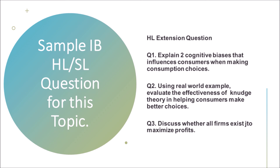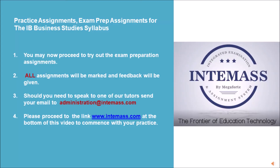Sample exam questions for this topic. HL Extension Question 1: Explain two cognitive biases that influence consumers when making consumption choices. Question 2: Using a real-world example, evaluate the effectiveness of nudge theory in helping consumers make better choices. Question 3: Discuss whether all firms exist to maximize profit.